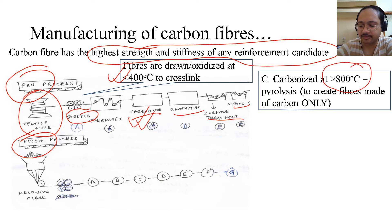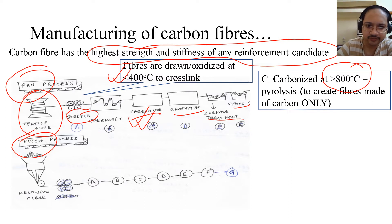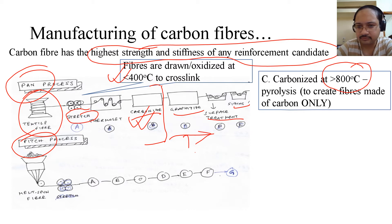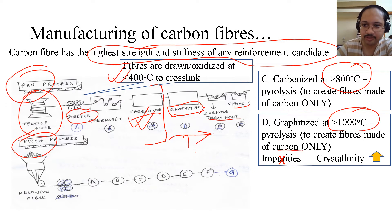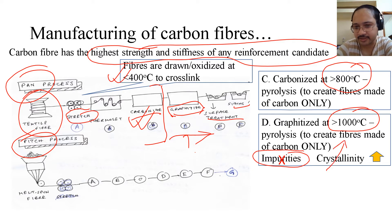In carbonization, the temperature is higher than 800 degrees Celsius — this is called pyrolysis — to create fibers made of carbon only. However, this does not yet give a pure carbon fiber. The next step is graphitization, which occurs at a temperature higher than 1000 degrees Celsius so that all impurities are eliminated and crystallinity increases, gradually imparting the desired properties of carbon fiber into the drawn fibers.